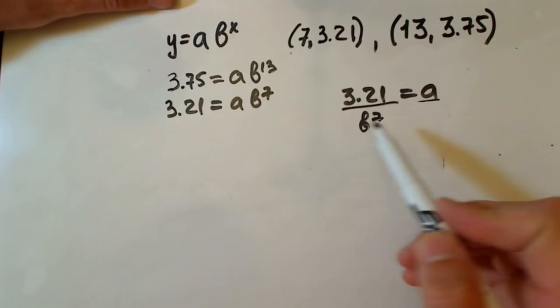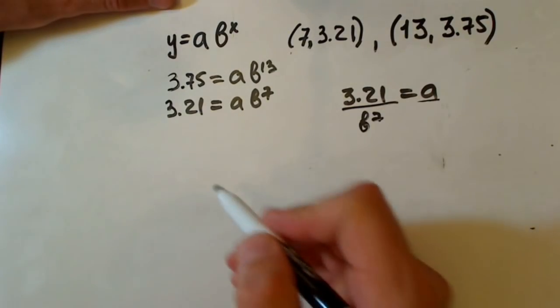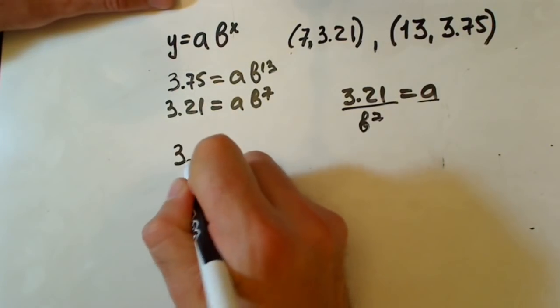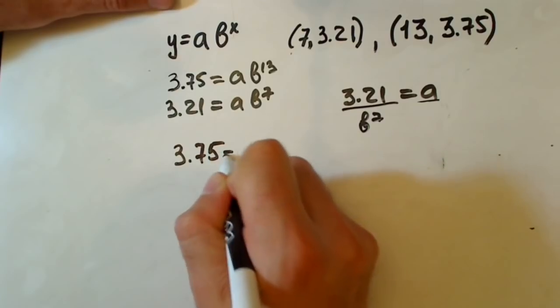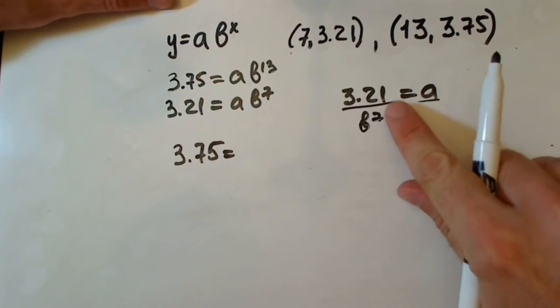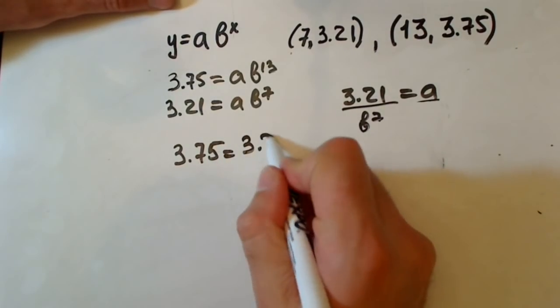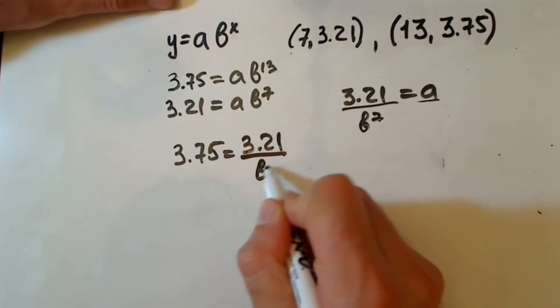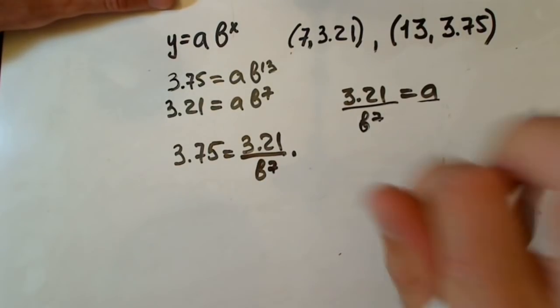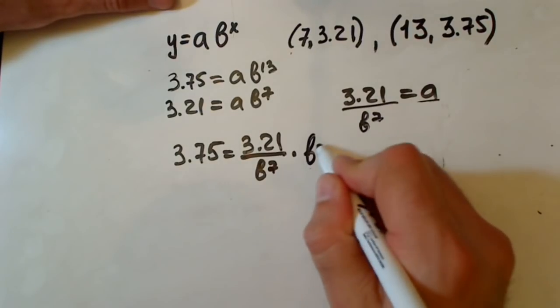Now, let's plug this into the second equation. We have 3.75 equals a, which is now 3.21 over b to the seventh, multiplied by b to the thirteenth power.